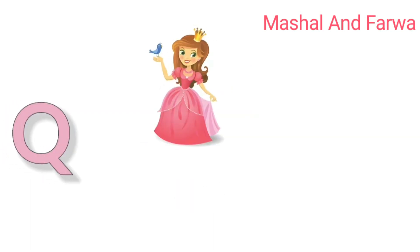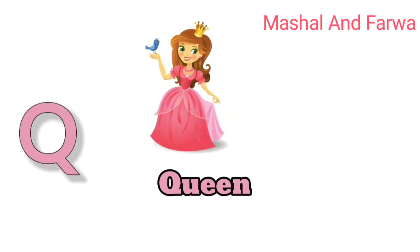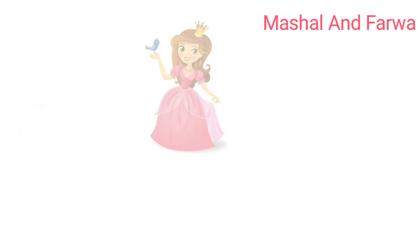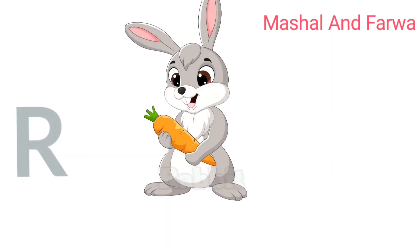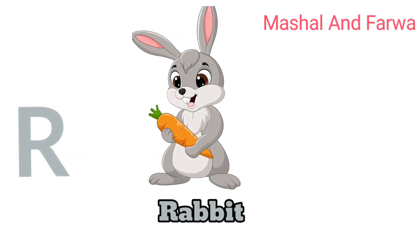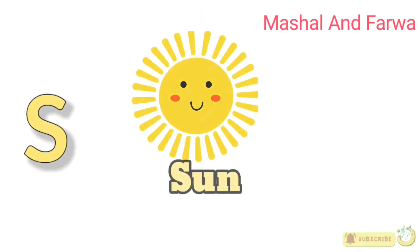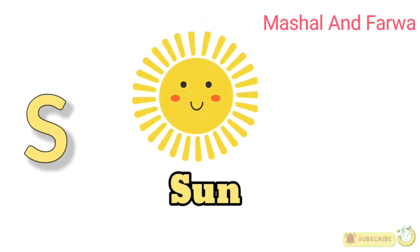U is for queen, c-c-c-queen. R is for rabbit, r-r-rabbit. S is for sun, s-s-s-sun.